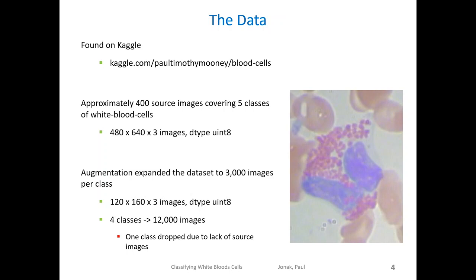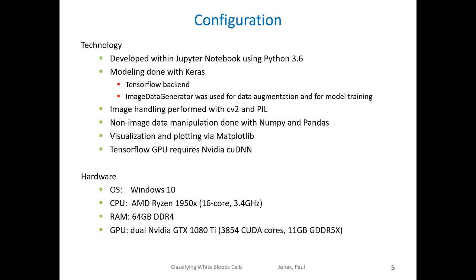Additionally, the images were downsampled by a factor of four and the pixel values were adjusted to be within the range of 0 to 1. For this project, the code was developed with Python 3. The modeling was done with Keras using a TensorFlow backend. More specifically, the GPU variant of TensorFlow was used alongside NVIDIA's deep neural network libraries. The other Python packages include CV2 and PIL for image handling, NumPy and Pandas for general data handling, and Matplotlib for visualization.